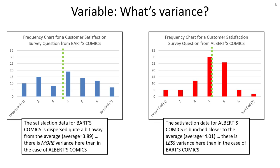There's a higher proportion of individuals who are both strongly satisfied and a large proportion who are not satisfied at Bart's Comics. On the other hand, Albert's Comics, with a similar average level of satisfaction, has a different level of dispersion — answers tended to be bunched towards the mean, with relatively few people who are not very satisfied or strongly satisfied.